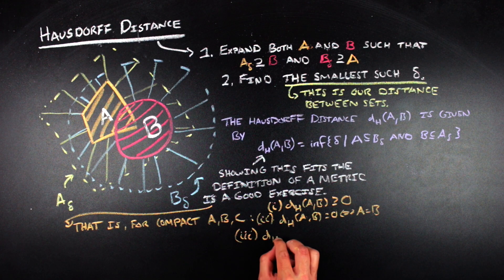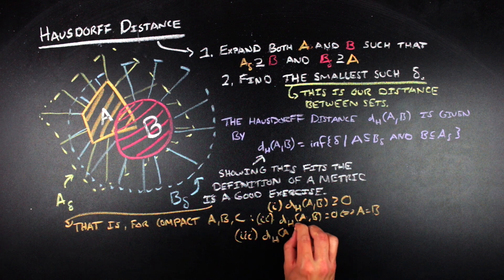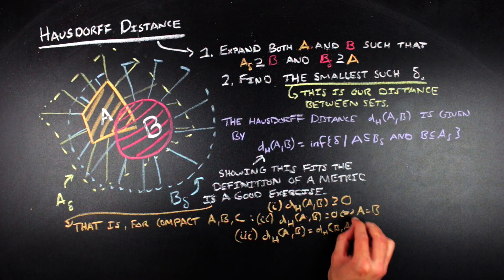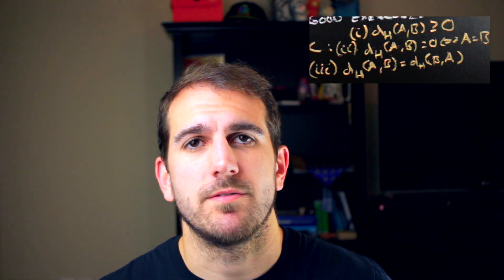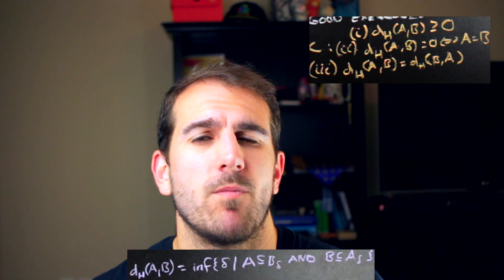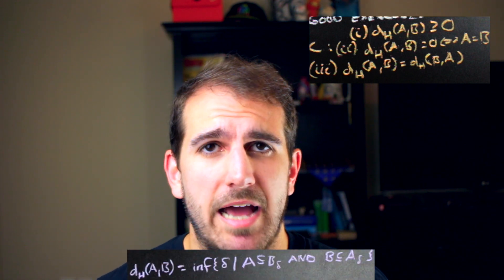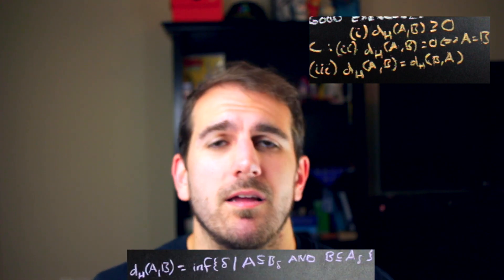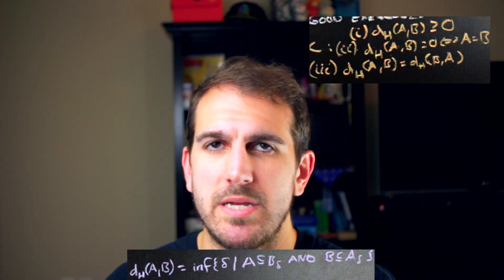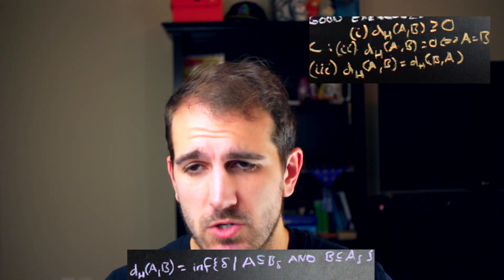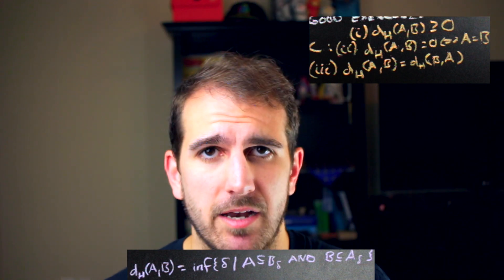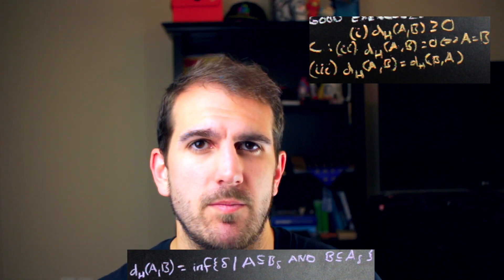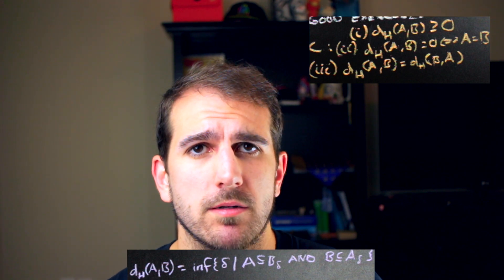And then the third property just falls out of the definition. That is, the distance function is symmetric, so the Hausdorff distance between A and B is the same as taking the Hausdorff distance between B and A. And we get this because in the definition of Hausdorff distance, we have the infimum of delta such that A delta contains B and B delta contains A. When you switch around the sets, you just switch around the statements in the and, which is an equivalent statement. So that is why the third property works.